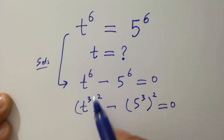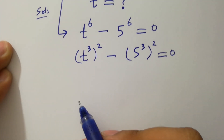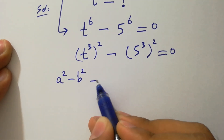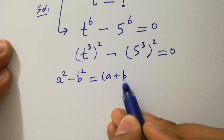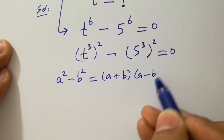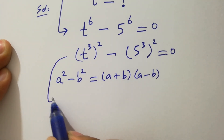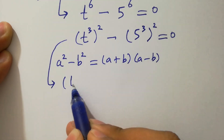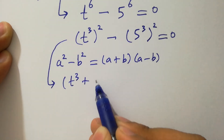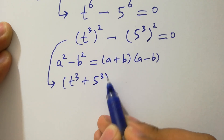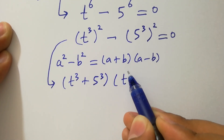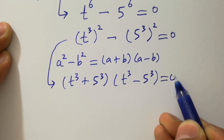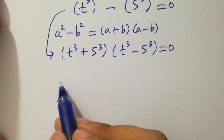Since 3 times 2 is 6, we apply the formula of a squared minus b squared, which equals a plus b times a minus b. It gives us t cubed plus 5 cubed, times t cubed minus 5 cubed, equal to 0.